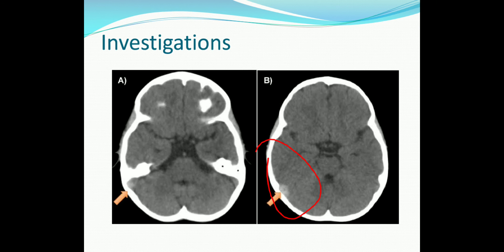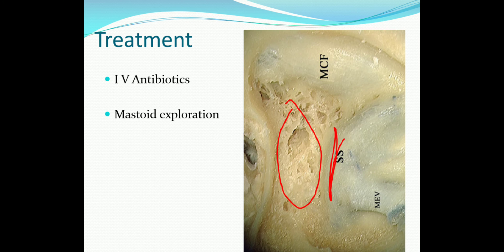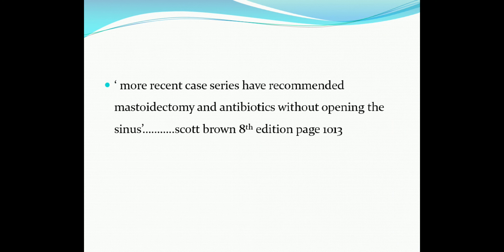Treatment includes IV antibiotics followed by mastoidectomy. There is some controversy about whether to open the sigmoid sinus — for undergraduates: clear the disease from the mastoid, remove the bone covering the lateral sinus, open the sinus, and remove the clot. However, quoting the 8th edition Scott Brown page 1013: more recent case series have recommended mastoidectomy and antibiotics without opening the sinus.